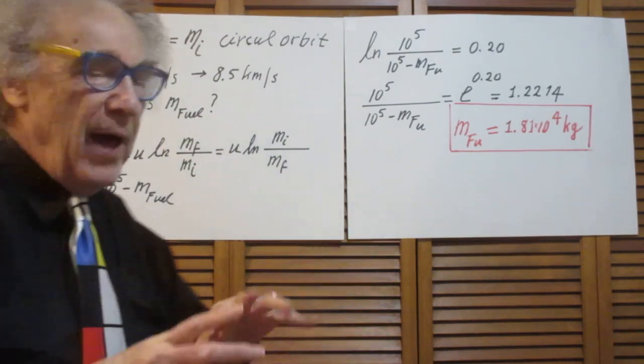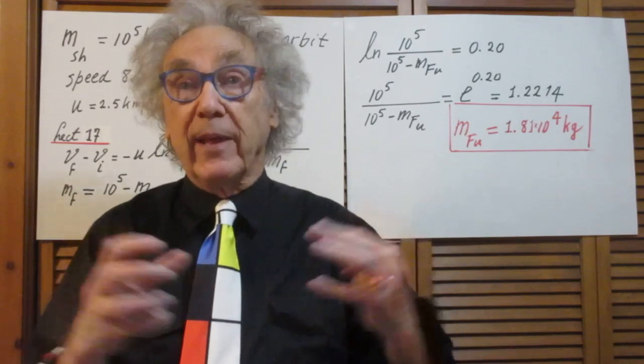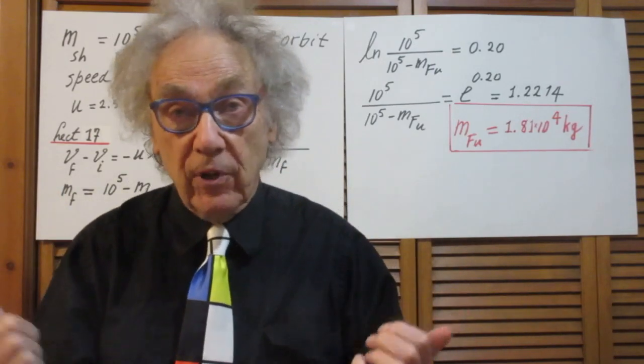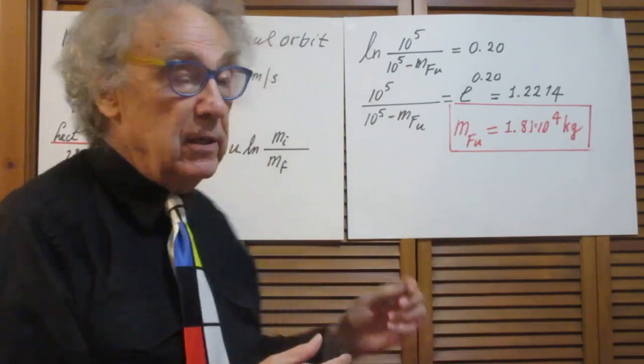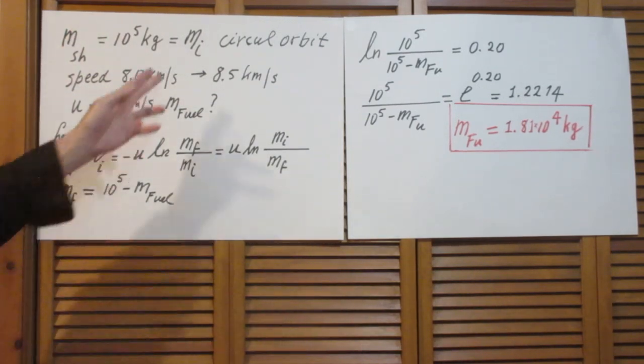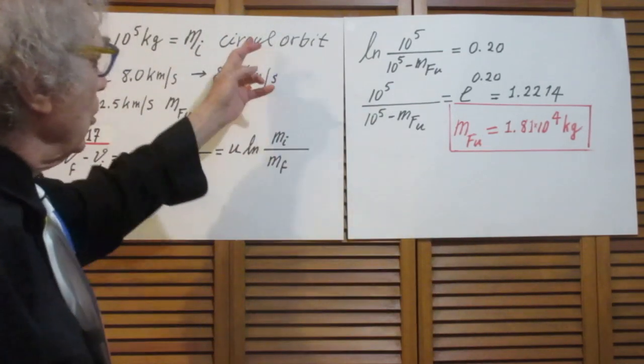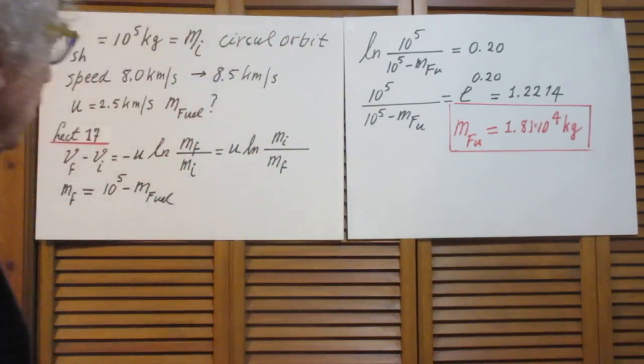I have a shuttle and the mass of the shuttle, including the fuel that can be used to burn the rockets, the whole thing is 100,000 kilograms. I call that the initial mass. It includes everything. And the shuttle is in a circular orbit around the Earth.